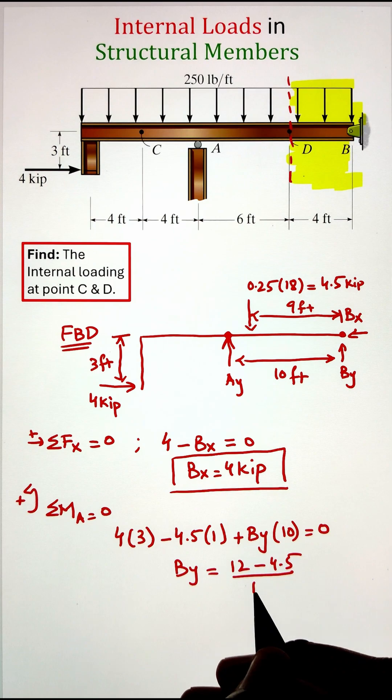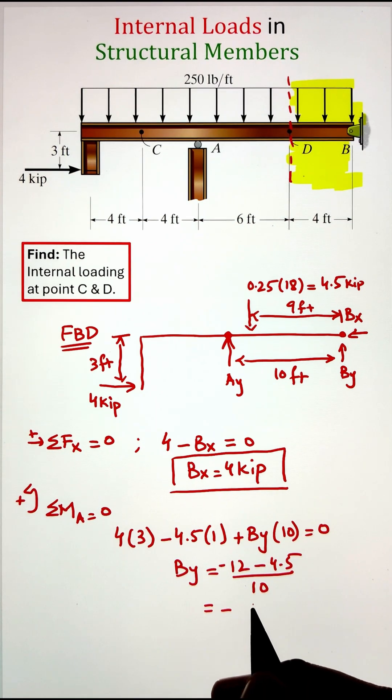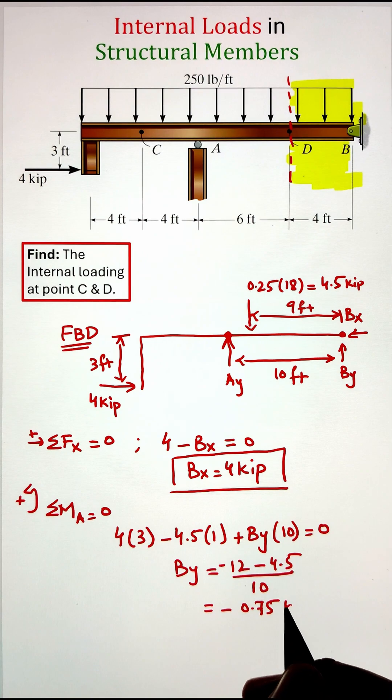Finally we have BY that has a moment arm of 10. Simplifying, we get the value of BY as negative 0.75 kilopounds.